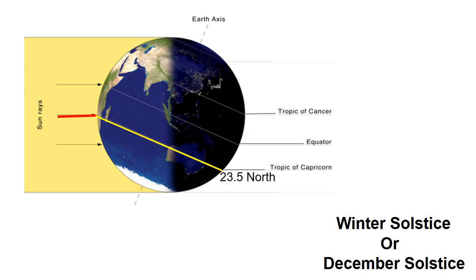The winter solstice usually occurs around December 20th or 21st. It is the shortest day of the year, which occurs when the sun is directly overhead at the Tropic of Capricorn. The winter solstice marks the shortest day and longest night of the year, signaling the start of winter in the northern hemisphere and summer in the southern hemisphere.